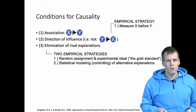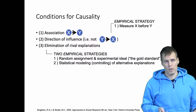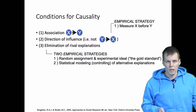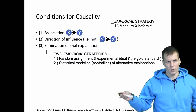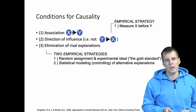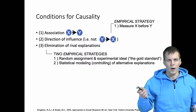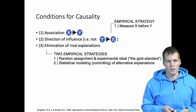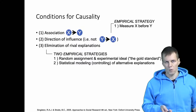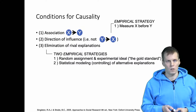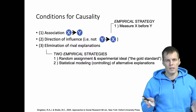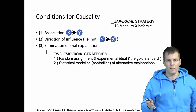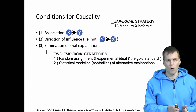In qualitative research, you don't see much of this. In some articles you see association — with maybe 4 to 20 cases, you could see a table showing that cases high on X are also high on Y — but that doesn't really qualify as an association because the sample sizes are so small that we can't rule out chance as an explanation. The direction of influence is also not explicitly mentioned, and I've never seen a qualitative article discuss control variables or conduct randomized experiments.